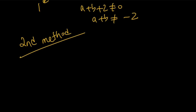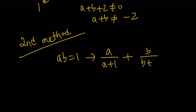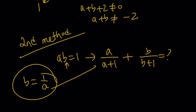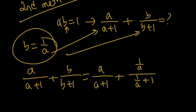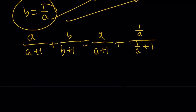Now let's talk about the second method. We have ab equals 1, and we want to simplify the same expression. For the second method, I'm going to isolate b: b equals 1 over a. Since neither a nor b can be 0, I can write b as 1 over a and substitute it in. So we get a over a plus 1, plus — replacing b with 1 over a in both the numerator and denominator of the second fraction. Substitution is a very powerful method. Then, rather than making a common denominator, a good alternative is multiplying numerator and denominator of the second term by a.